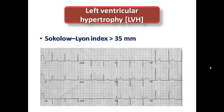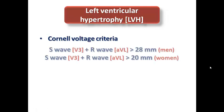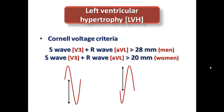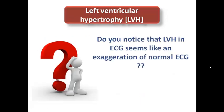The second criterion is the R-wave amplitude in aVL — if the R-wave amplitude in aVL is more than 11 mm, this is one of the ECG features to diagnose LVH. The third is the Cornell voltage criteria: the sum of the S-wave in V3 plus the R-wave in aVL — if more than 28 mm in males or more than 20 mm in females, this is diagnostic for LVH. It combines a precordial S-wave with a limb lead R-wave, making it different from the Sokolov-Lyon index.